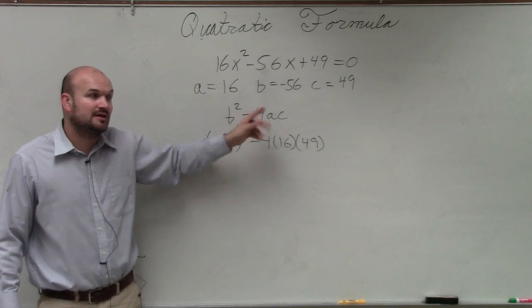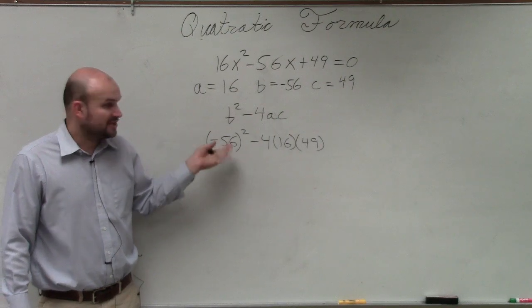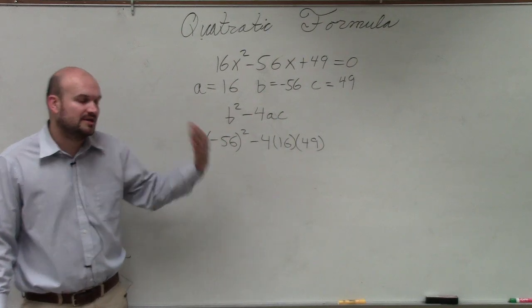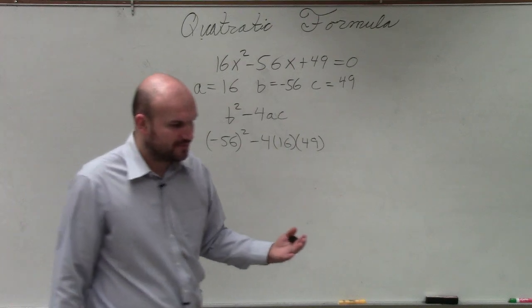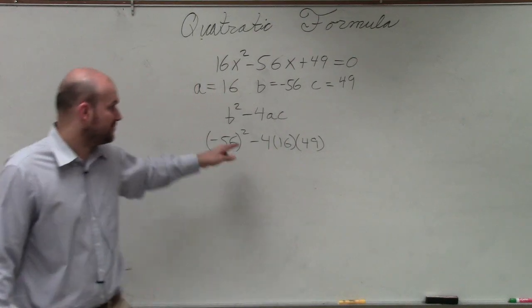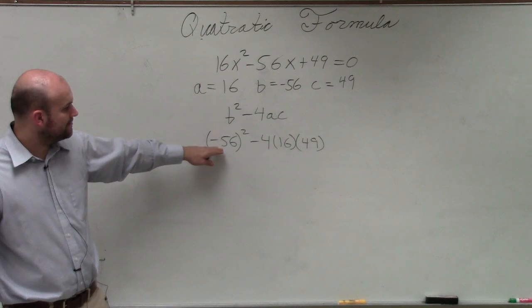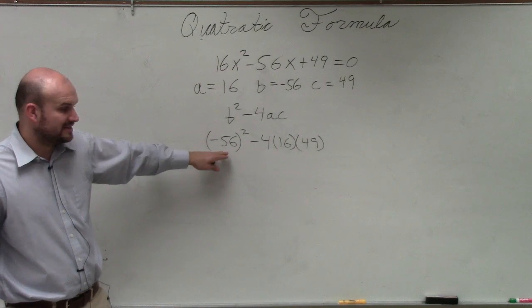If you type in your calculator negative 56 squared with no parentheses, you're going to get a negative value because the calculator does order of operations. So always make sure you put in parentheses, especially when you are dealing with negatives.